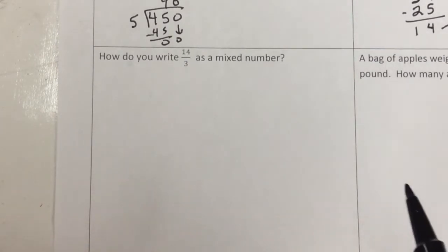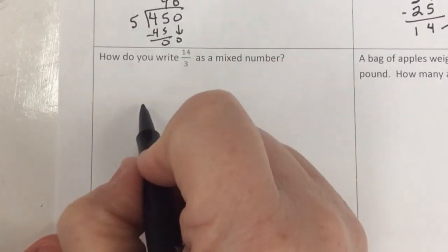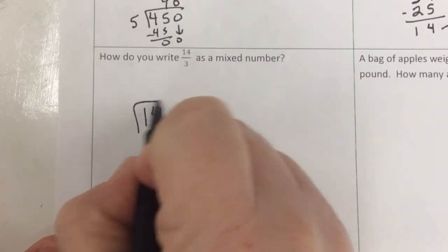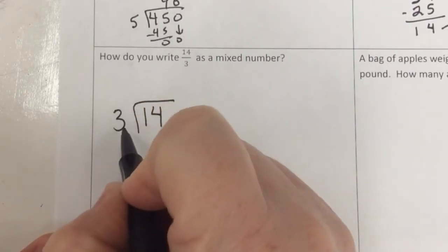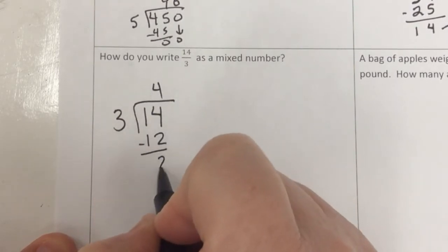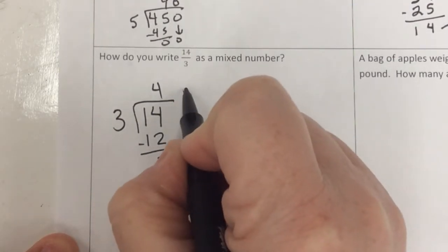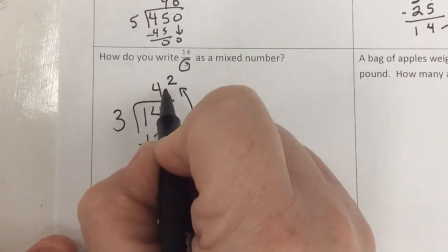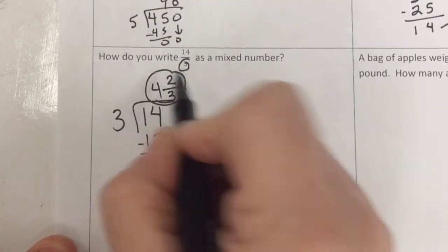Next one. How do you write 14/3 as a mixed number? Well, it's an improper fraction. So I know to divide numerator divided by denominator. 3 times 4 is 12, and I subtract and get a 2. That 2 becomes my numerator, and my denominator stays that number there. 4 and 2/3.